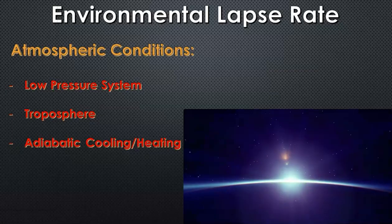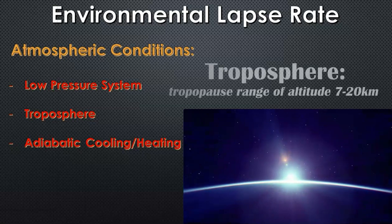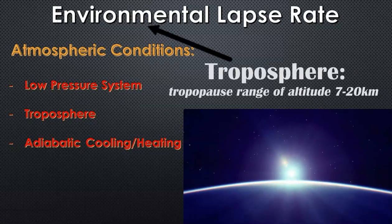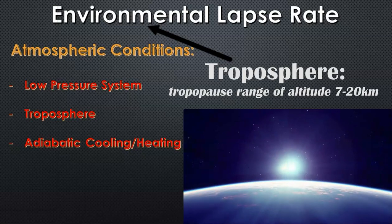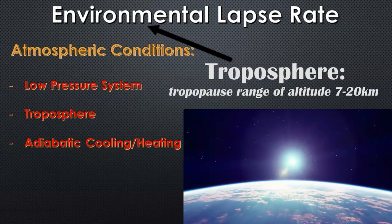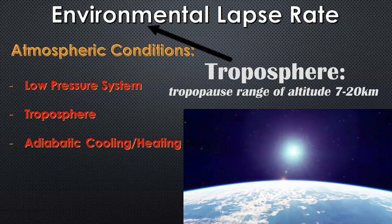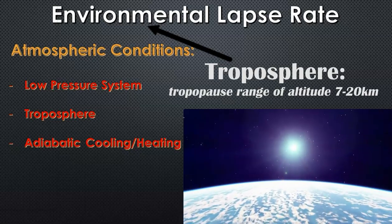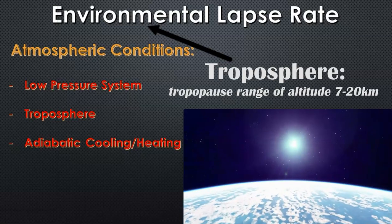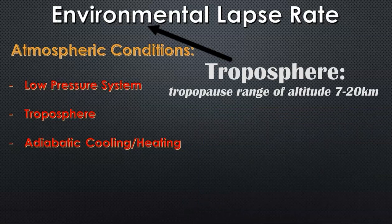Within our atmosphere, within the first layer — the troposphere — that goes from the surface up to around 7 to 20 kilometers altitude. It depends: if you're on the equator, it's more towards the 20 kilometer mark, and if you're close to the poles, it's more towards the 7 to 10 kilometer range. This layer is what we refer to as the environment, as this part of the environmental lapse rate — the environment is the troposphere.